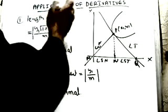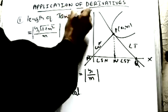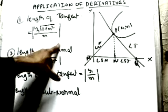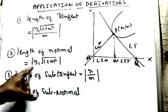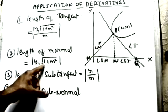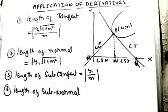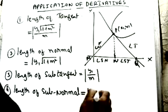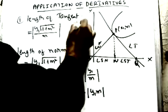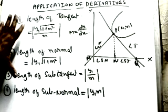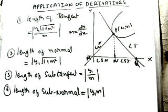The formulas to memorize: Length of tangent = |y₁| × √(1 + m²) / |m|. Length of normal = |y₁| × √(1 + m²). Length of sub-tangent = y₁/m. Length of sub-normal = y₁ × m. Here m is always the slope of the tangent, i.e., dy/dx.